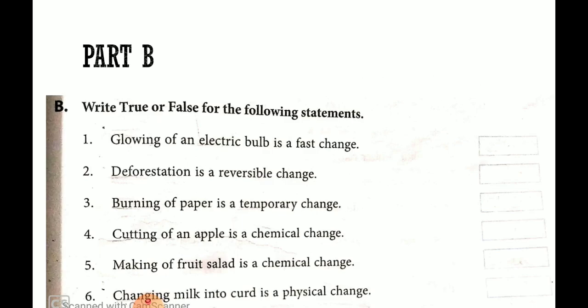That is true or false. Write true or false for the following statements. Then glowing of an electric bulb is a fast change. Kya bulb ko jalana ek fast change hota hai? Yes. Jaise button on karte hain vaisi bulb jal jata hai. So that is true.